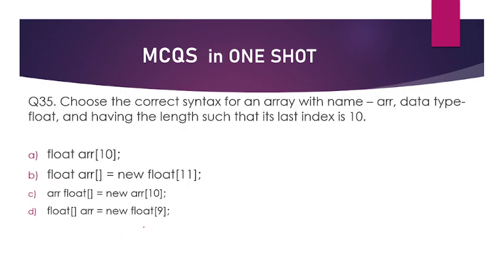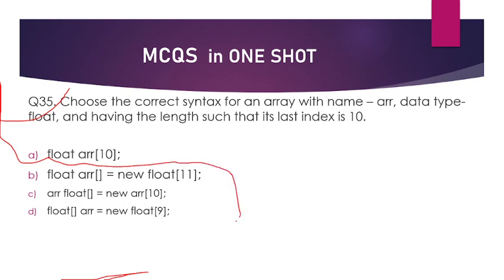Choose the correct syntax for an array with name R, data type float, and having length such that its last index is 10. You need to declare an array named R with data type float. If the last index is 10, then the length will be 11. The correct option is: float R = new float[11]. So the answer is option number B.